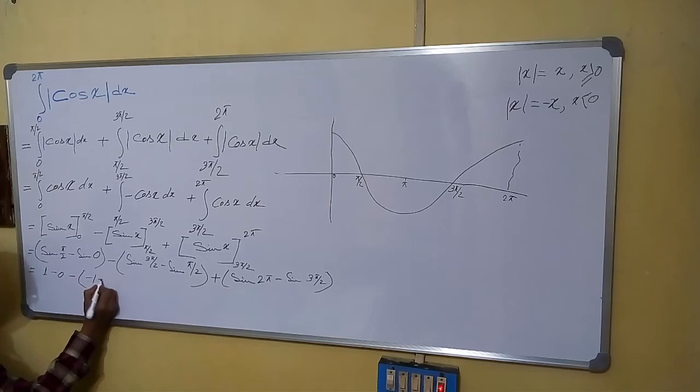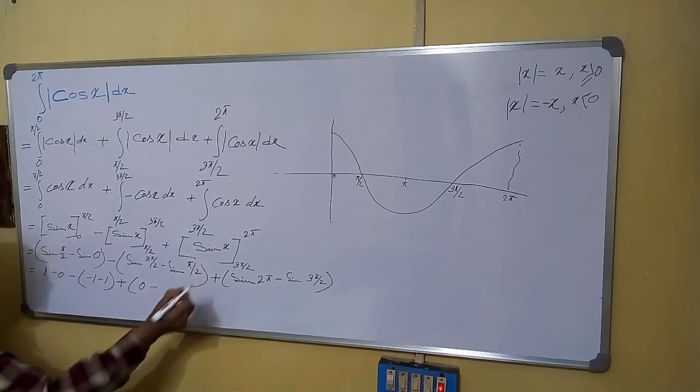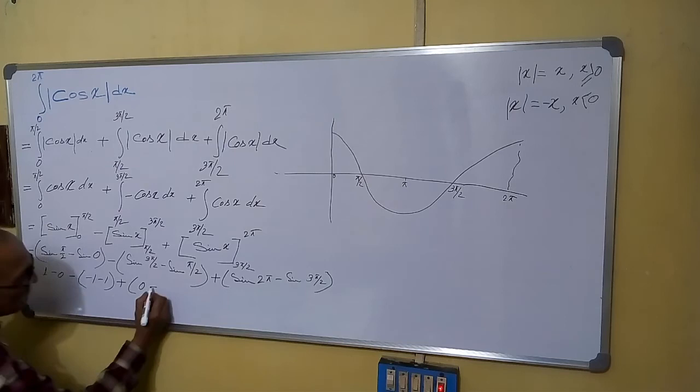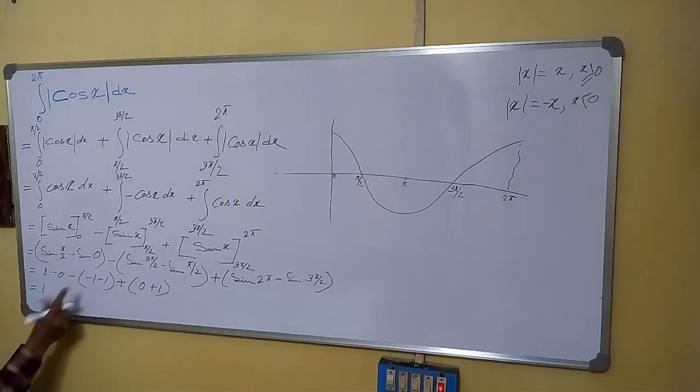Plus sine 2 pi is 0 minus sine 3 pi by 2 is minus 1, so minus of minus 1 we are writing it plus 1. Equals to 1 minus 1 minus 1 minus 2, so it becomes plus 2 and plus 1. So this is equals to 4.